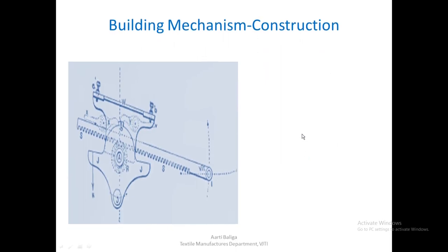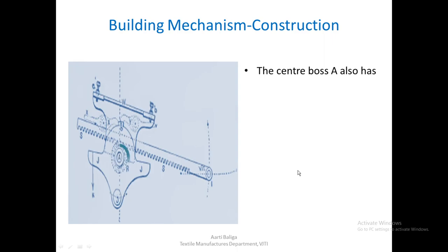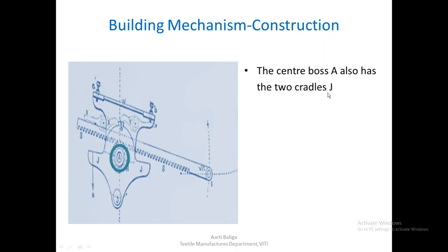With that, let us see further details of this building mechanism. This is the center A we have just seen. The center boss A also has a few more things centered around it, and one of them is the cradle marked as J.